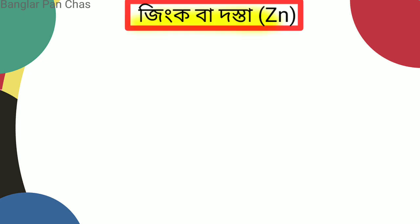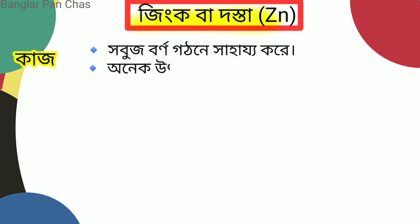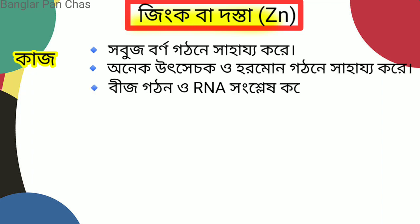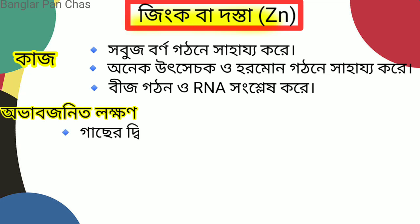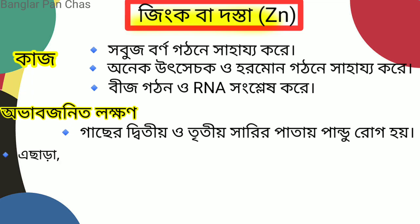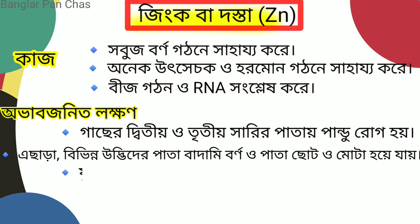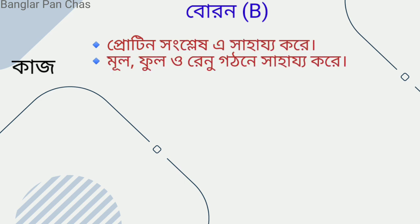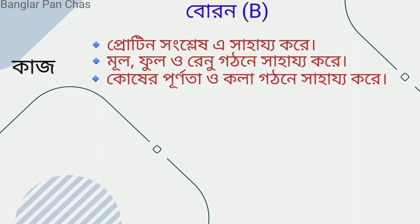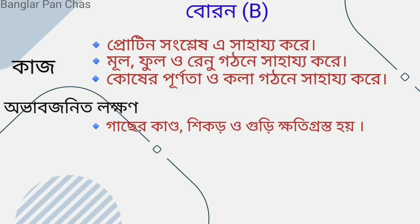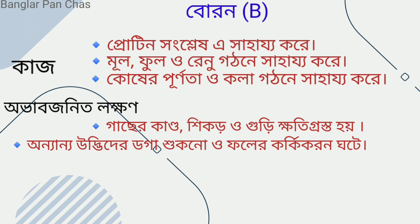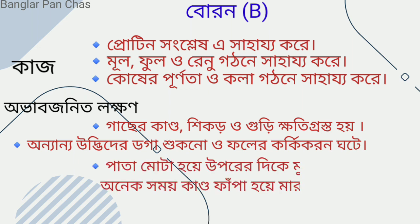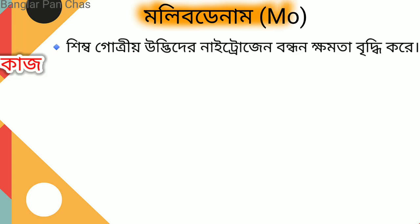Due to copper deficiency, the symptoms include various growth hormones being disrupted in the plant. Due to zinc deficiency, the seed germination capacity decreases. Due to boron deficiency, the protein synthesis in the plant is affected, and at many times the stem/branch becomes bent or abnormally elongated and hardens, and young and tender leaves become affected.